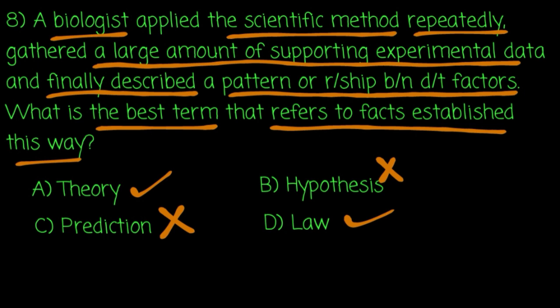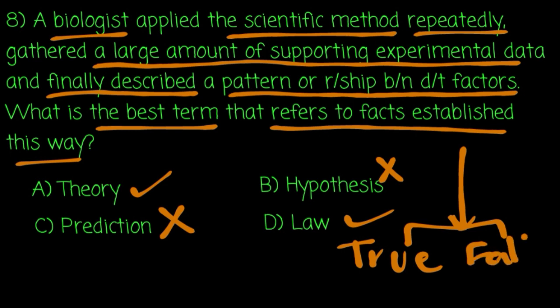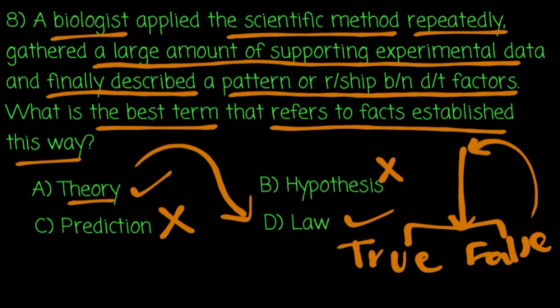When an experiment is conducted and proven repeatedly, the hypothesis can become a theory. A hypothesis is falsifiable — it can be shown true or false. When tested many times and supported, it becomes a theory. A theory identifies relationships between variables and patterns discovered through repeated experimentation.